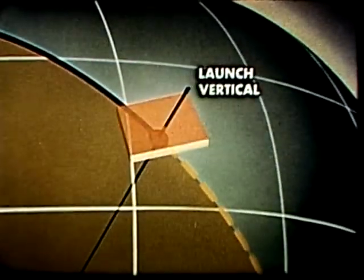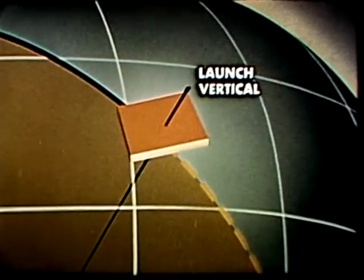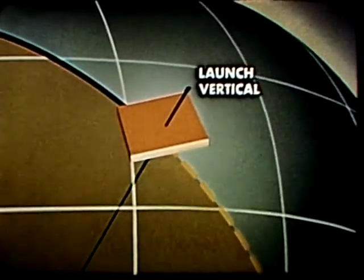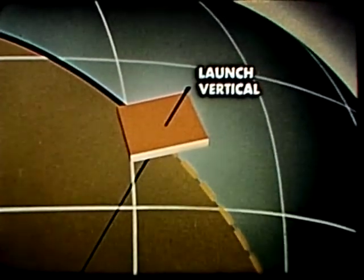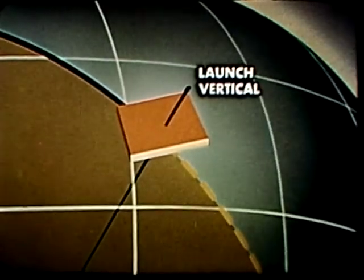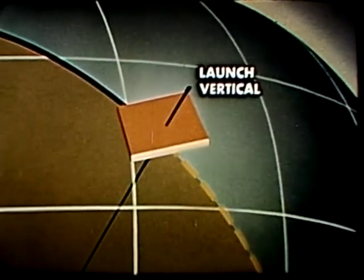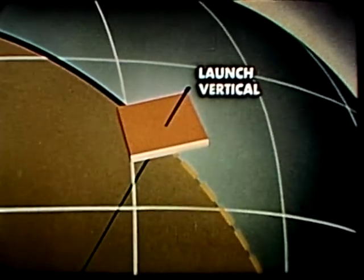Here is how inertial guidance theory is applied in a typical missile system. First, we place a platform at the launch point. This platform establishes the reference that is carried in the airframe.